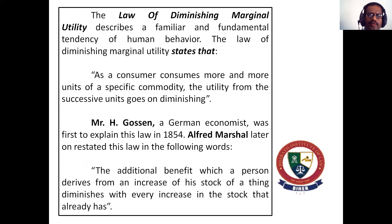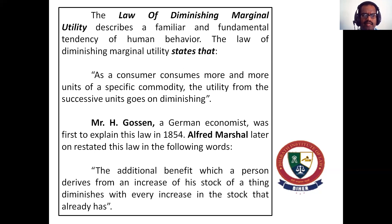The law of diminishing marginal utility is a familiar and fundamental tendency of human behavior. The law states that as a consumer consumes more and more units of a specific commodity, the utility from successive units goes on diminishing. Mr. Gossen, a German economist, was the first person to explain the law in the year 1854.